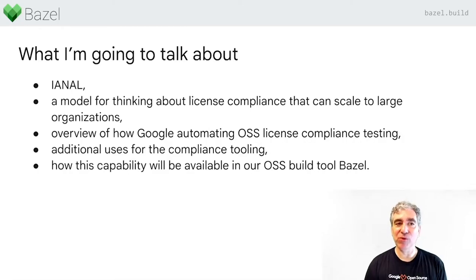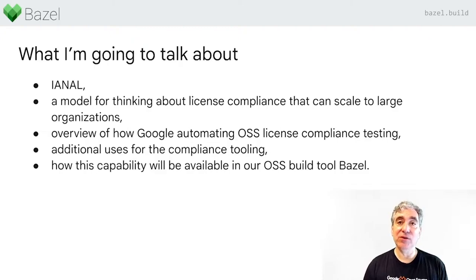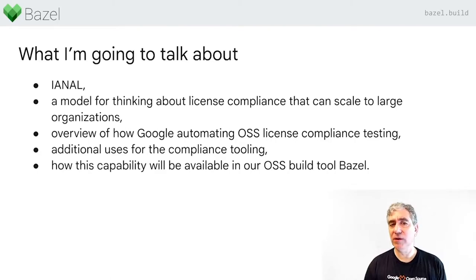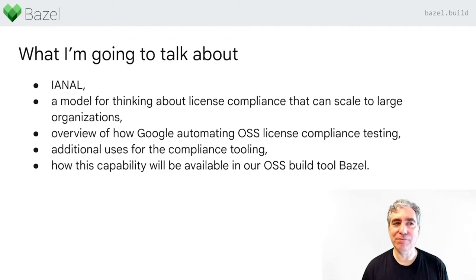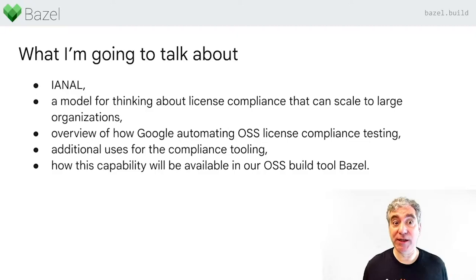The examples come from Google's version of this system. I'll talk about how we can use this mechanism for compliance and audit-related things, not necessarily about licensing. And finally, how this is available in the OSS build tool Bazel. That's why I've got Bazel logos on the slide rather than Google's — this should all be available to you already as open source. It's not a proprietary thing to Google.